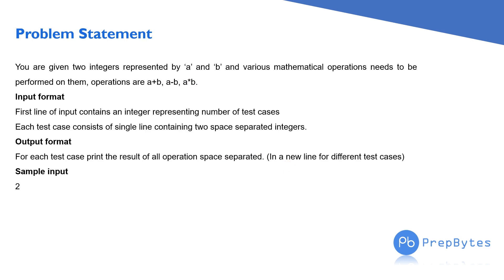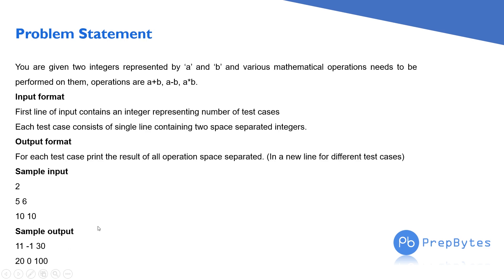The sample input has two test cases. The first test case has a equals five and b equals six. The second test case has a equals ten and b equals ten. The sample output for the first test case is '11 minus1 30' — space separated, not on a new line. The sample output for the second test case is '20 0 100'. So we have to code this with the different input and output format.